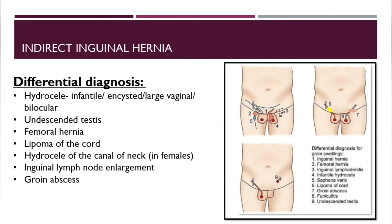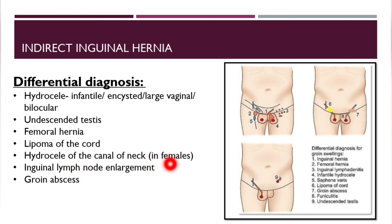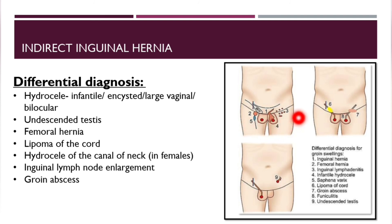To conclude, the differential diagnosis includes: infantile hydrocele, undescended testes, femoral hernia, lipoma of the cord, hydrocele of the canal of Nuck (in females), inguinal lymph node enlargement, groin abscess, saphena varix, and funiculitis. The image shown labels these as: (1) inguinal hernia, (2) femoral hernia, (3) inguinal lymphadenitis, (4) infantile hydrocele, (5) saphena varix, (6) lipoma of the cord, (7) groin abscess, (8) funiculitis, and (9) undescended testes.